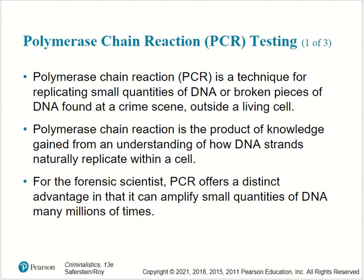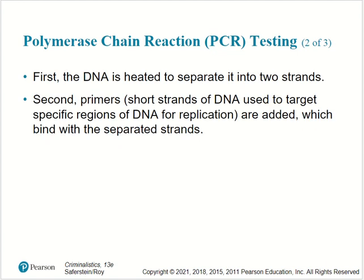PCR — polymerase chain reaction — is a technique for replicating small quantities of DNA or broken pieces of DNA found at a crime scene outside of a living cell. PCR is the product of knowledge gained from understanding how DNA strands naturally replicate within a cell. For the forensic scientist, PCR offers a distinct advantage in that it can amplify small quantities of DNA many millions of times over. First, the DNA is heated to separate it into two strands. Second, primers — short strands of DNA used to target specific regions of DNA for replication — are added, which bind with the separated strands.